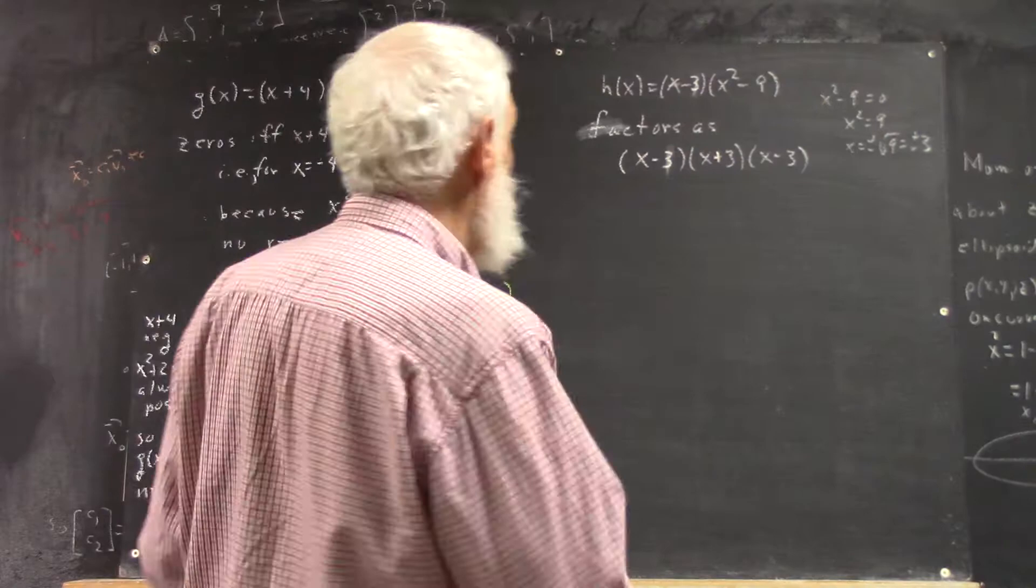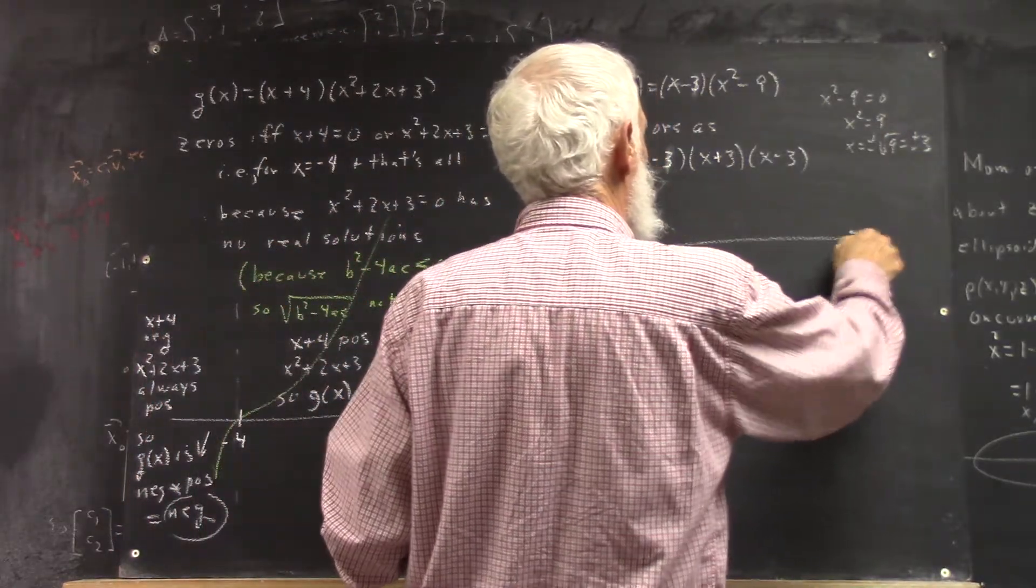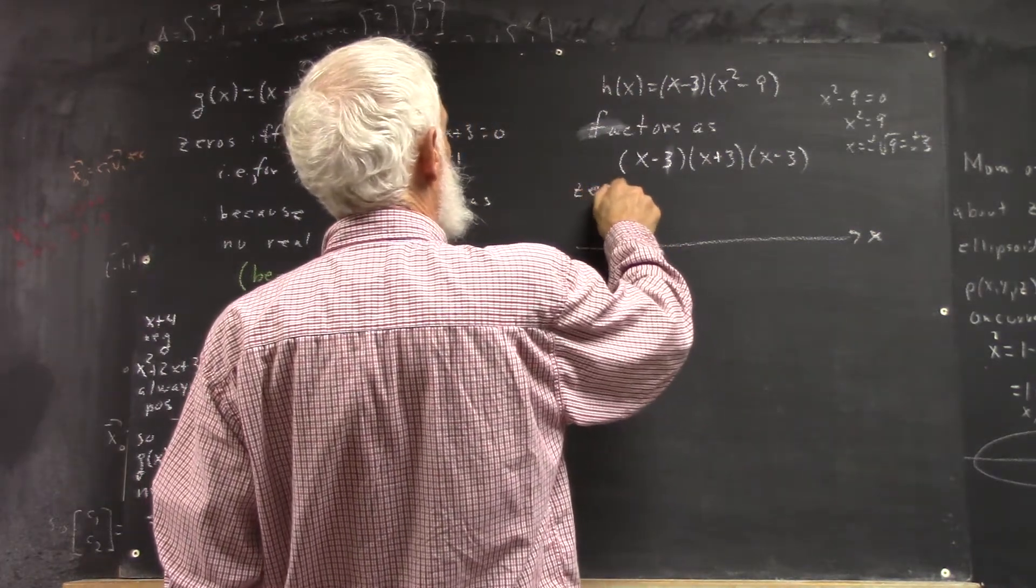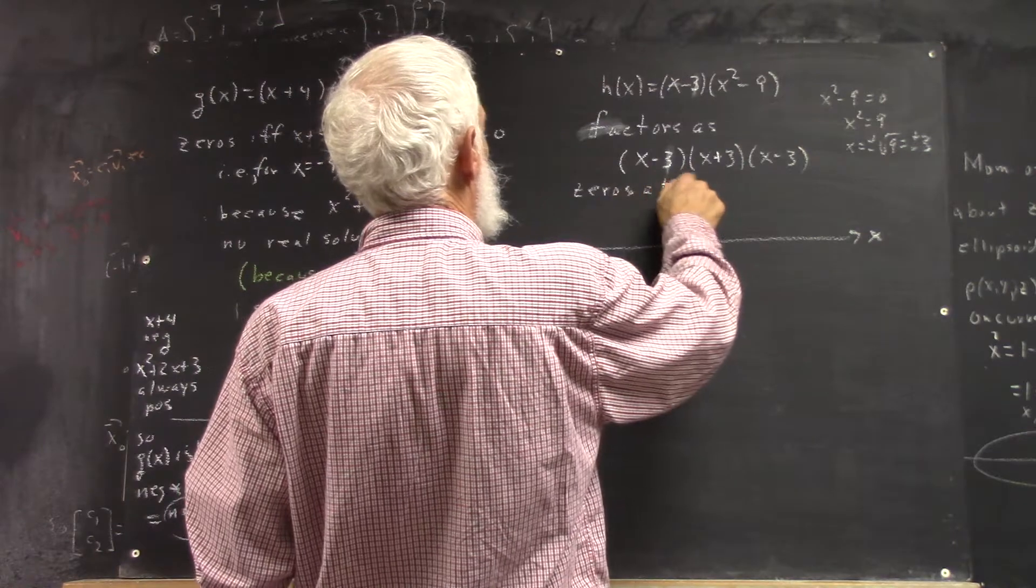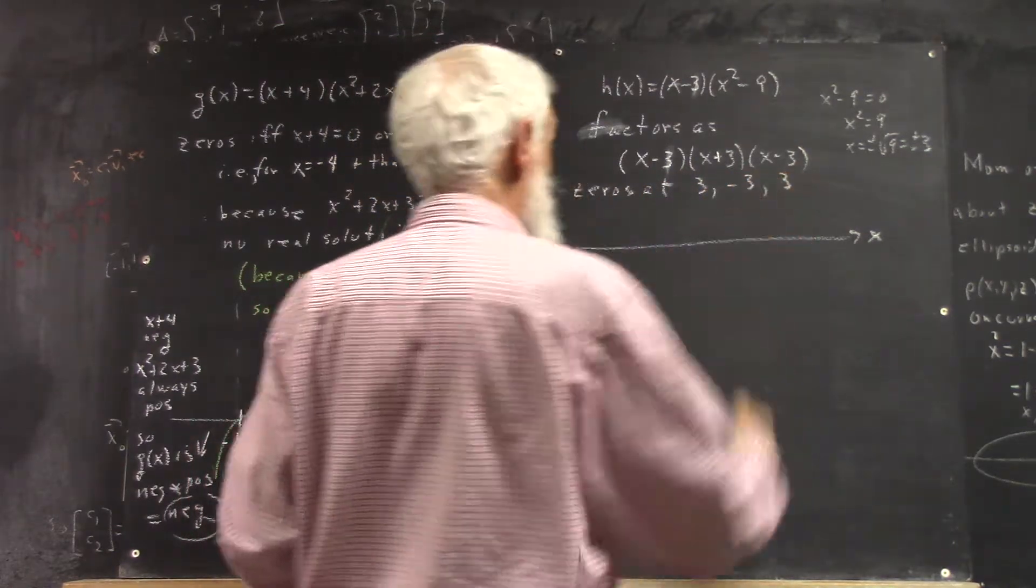Either way, we get this. Here's our x-axis, and here is, so zeros at 3, negative 3, and 3.